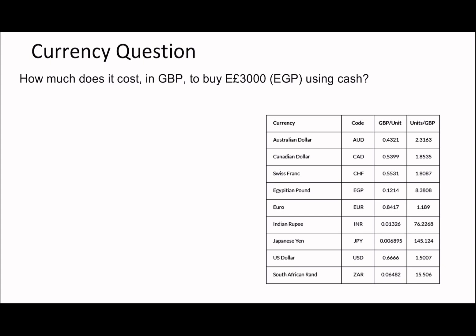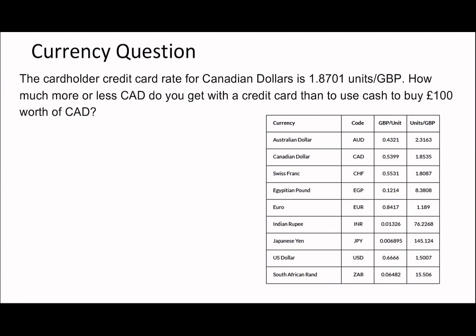Next question: how much does it cost in GBP to buy 3000 EGP (Egyptian pounds) using cash? The table tells you per unit how much GBP it costs. If you're going to buy 3000 of these, you multiply by 0.1214. That gives you 364.2 pounds. Fairly straightforward — not too difficult.